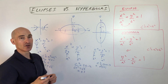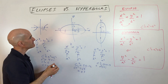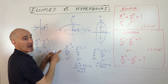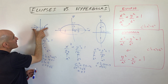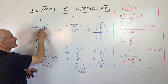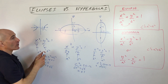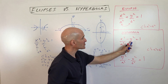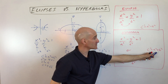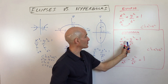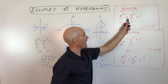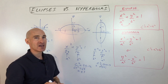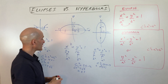With ellipses, the foci are closer to the center — they're on the inside. With hyperbolas, the foci are further out from the center — they're on the outside. Another way to remember: in hyperbolas, you're subtracting in the equation but adding in the focus formula. With ellipses, you're adding in the equation but subtracting in the focus formula. It's the opposite.